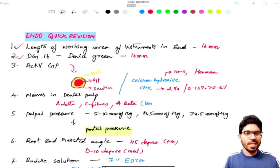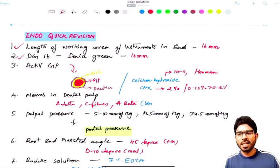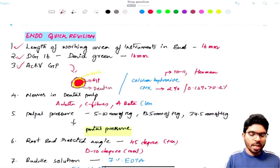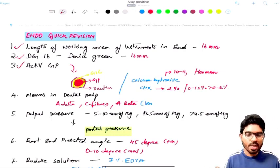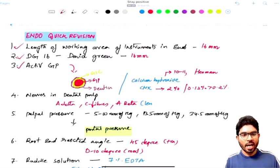You need to make a note about the DG-16 Explorer, that is Endodontic Explorer, where DG is nothing but David Green. 16 is nothing but the working area, again 16 millimeters here. Next one is Active GP. Active GP is nothing but GIC-coated GP, so Active GP is nothing but a GIC-coated GP.